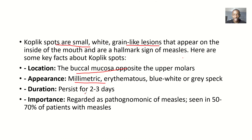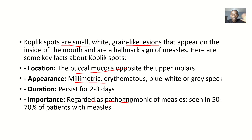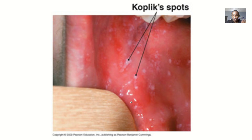In duration, they can persist for about two to three days after they appear. Importantly, they are regarded as pathognomonic of measles and are seen in about 50 to 70 percent of patients with measles. This is what a Koplik spot looks like.